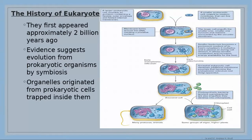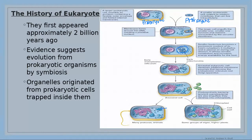According to some scientists, eukaryotic cells evolved from prokaryotic cells. These prokaryotic cells performed what we call symbiotic association — a bigger prokaryotic cell and a smaller prokaryotic cell. The smaller one entered into the bigger cell, stayed inside, and finally became an organelle. This is how the eukaryotic cell evolved from prokaryotic cells.